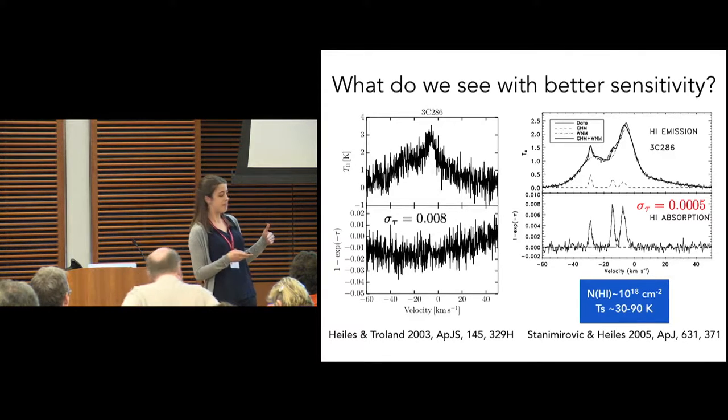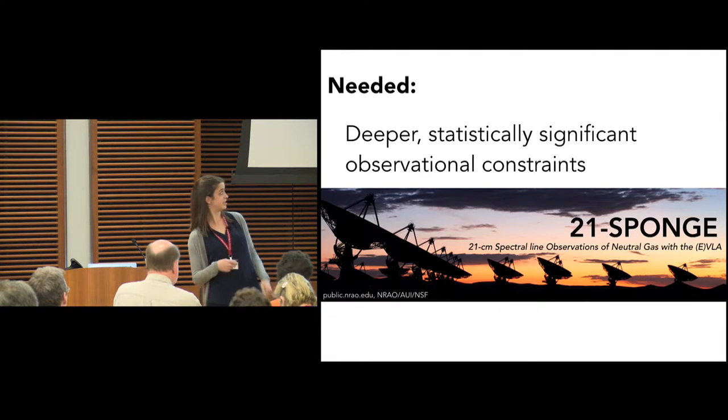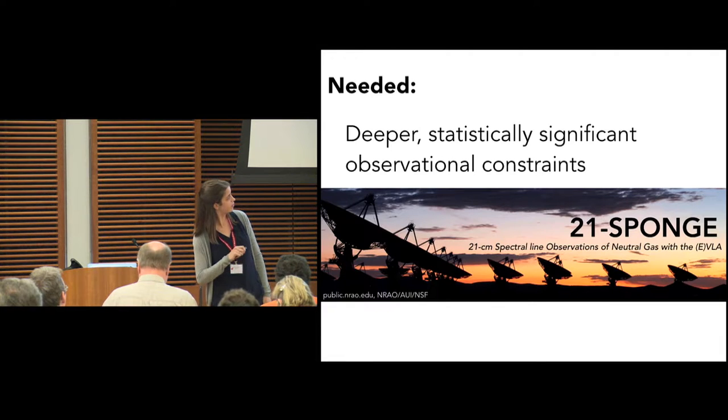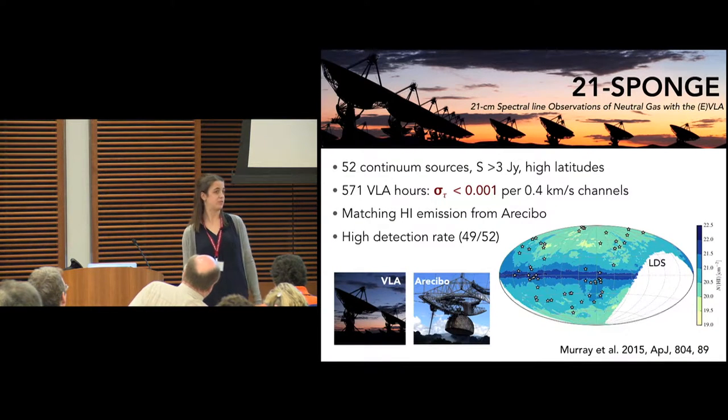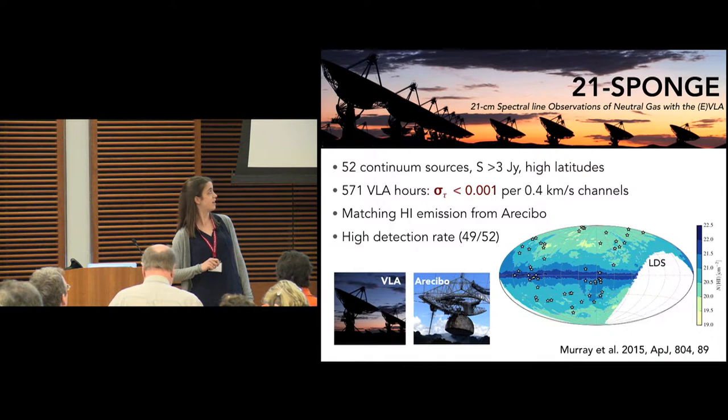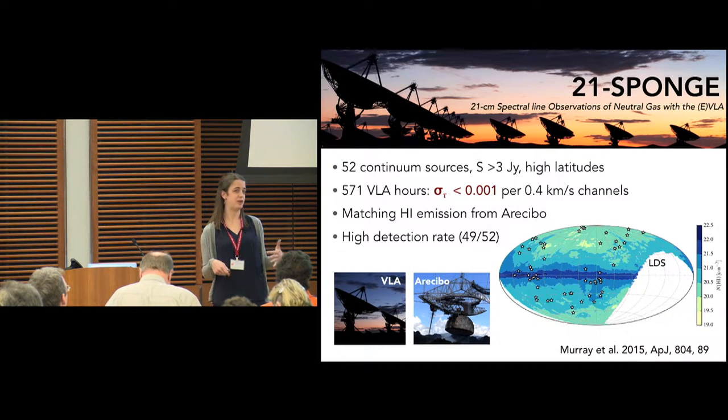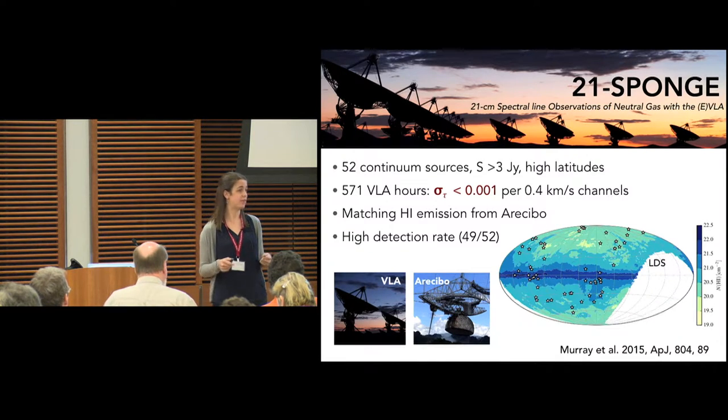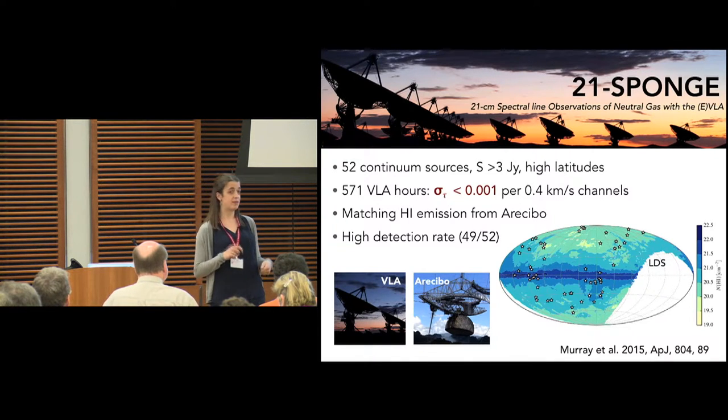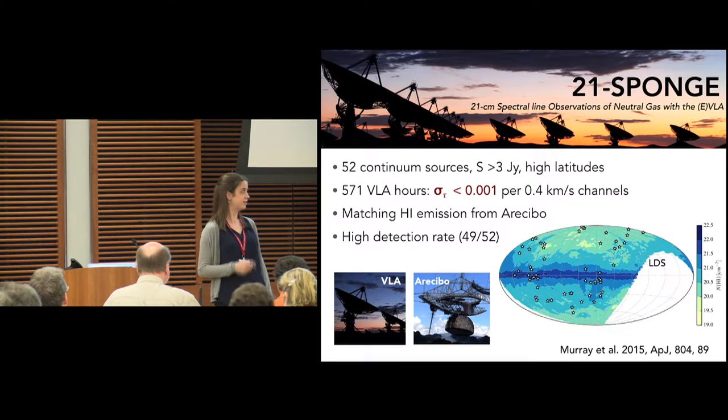What we wanted to do following this study was gather a larger sample of deeper, more statistically significant constraints on this material. That's where my project comes in: 21 SPONGE, which stands for 21 centimeter spectral line observations of neutral gas with the VLA. It's a high sensitivity survey for H1 absorption in the galaxy. We have 52 continuum sources mostly at high latitude, and after almost 600 hours at the VLA we reach better than a part in a thousand in terms of RMS noise in H1 optical depth. This gives us sensitivity to detect all kinds of warm and thermally unstable gas if it's sitting out there in the ISM. We have matching H1 emission from Arecibo, which is very important for constraining the spin temperature, and a high detection rate: 49 out of 52 sources we find significant absorption.